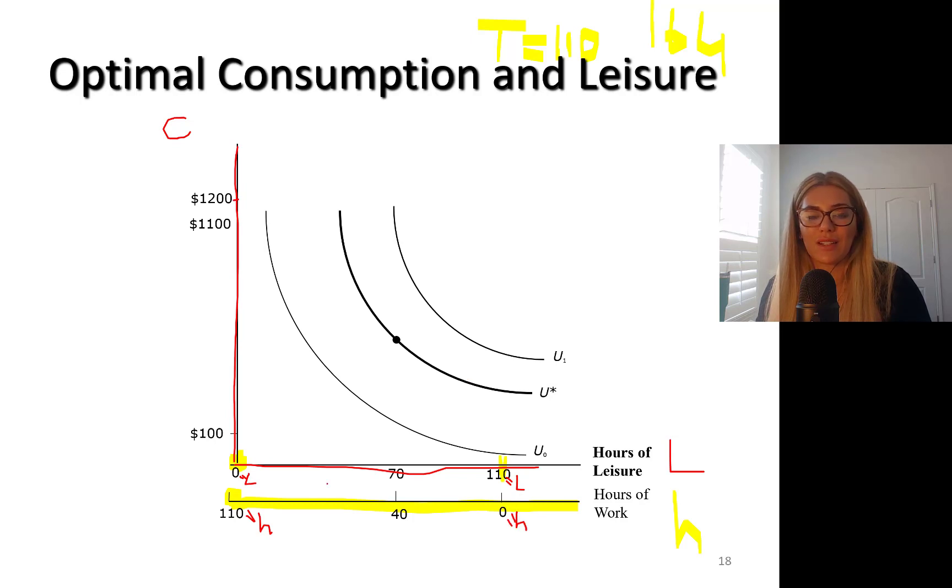There is a set of indifference curves here. U0 is a lower indifference curve, convex to the origin, downward sloping. U star, U1 - higher indifference curves are better. For instance, if I had no budget line I would want U1, however if I have a budget line looking like this...